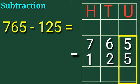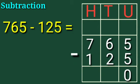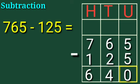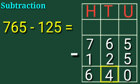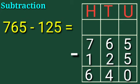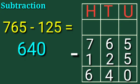Now children, subtract these numbers. 5 minus 5 is equal to 0. 6 minus 2 is equal to 4. 7 minus 1 is equal to 6. Children, 0 is under the units column, 4 is under the tens column, and 6 is under the hundreds column. So 765 minus 125 is equal to 640.